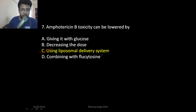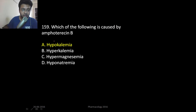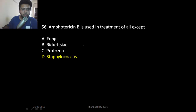Amphotericin B toxicity can be reduced by using a liposomal delivery system, which is also costlier. Amphotericin B causes hypokalemia because it is nephrotoxic. Amphotericin B is used in treatment of all fungal infections except those caused by organisms like Staphylococcus, because the staphylococcal cell membrane is not made up of ergosterol — there is a difference of target.